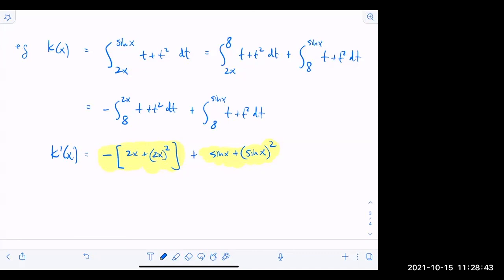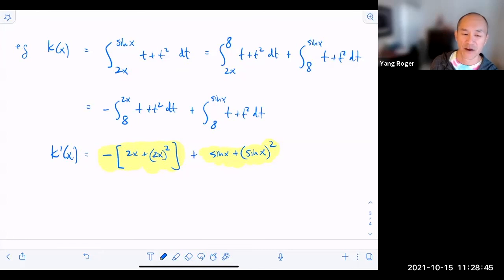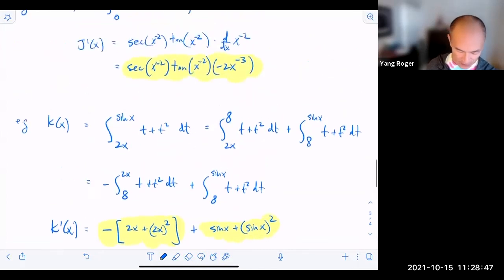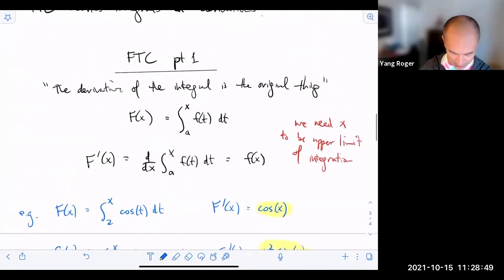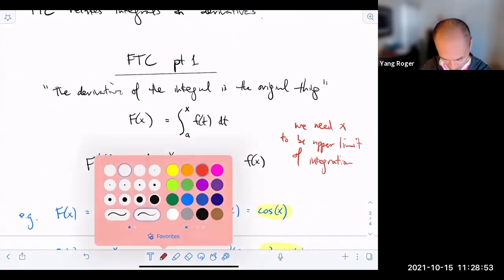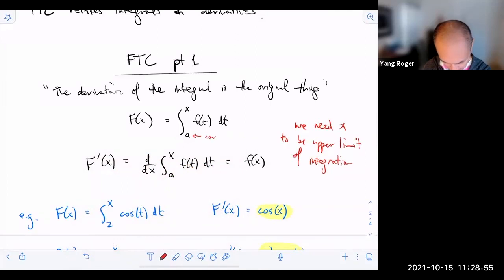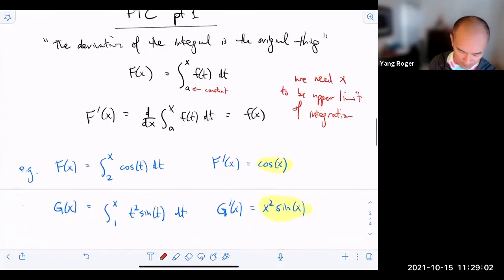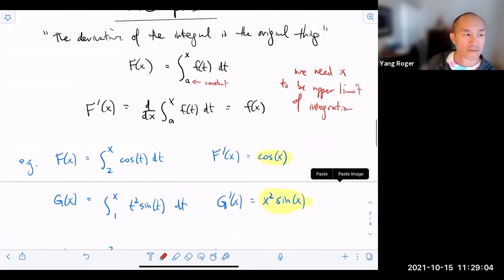Steph asks, why do we need to split it up? Is it because there can't be variables in both limits? That is correct. So if you were to look at the theorem, the lower limit here must be a constant. It's required. Make sense?